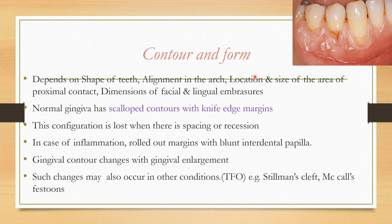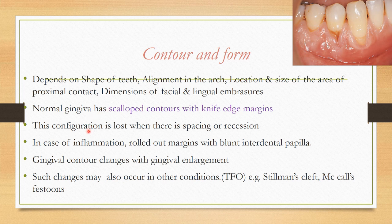Contour and form depend on the shape of teeth and alignment in the arch, location and size of the proximal contact area, and dimensions of the embrasures and facial abrasions. Normal gingiva is scalloped and knife-edged. In disease, there are rolled margins with blunt interdental papilla. In gingival enlargement, contour changes occur. In traumatic occlusion, Stillman's cleft — an apostrophe-shaped cleft — and McCall's festoon — a thickened band-like gingival margin — may be seen.